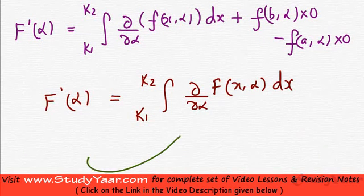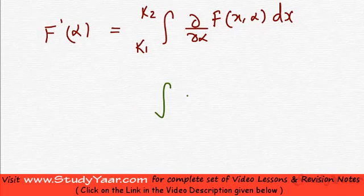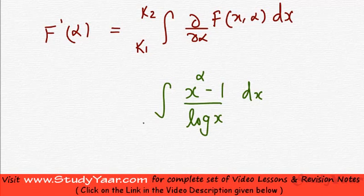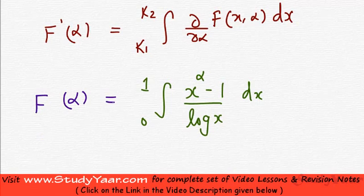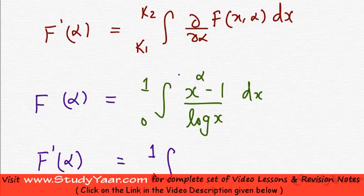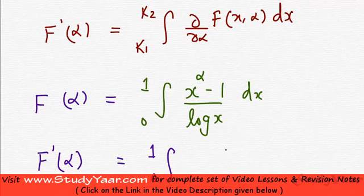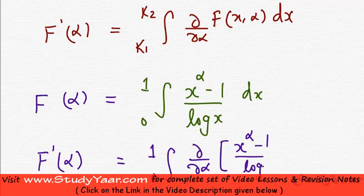This rule is used for certain integrals which cannot be easily solved. For example, suppose you want to integrate (x^alpha - 1) / log(x) dx from 0 to 1. We assume this is f(alpha). Then f'(alpha) is given by the integral from 0 to 1 of the partial derivative of (x^alpha - 1) / log(x) with respect to alpha dx.